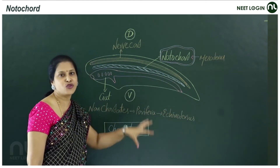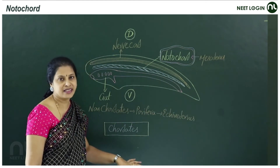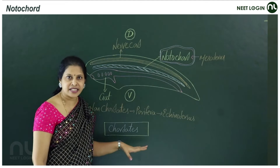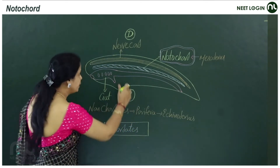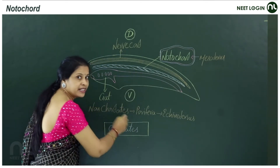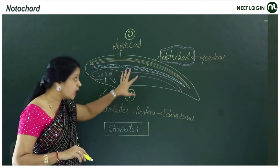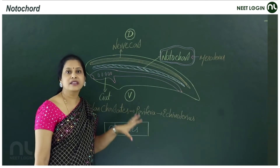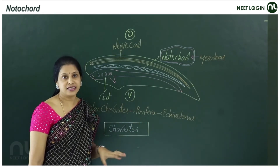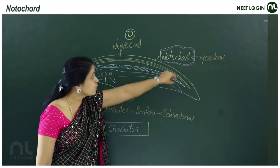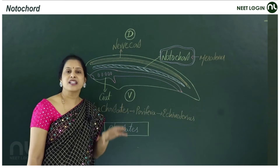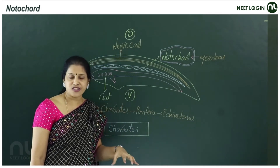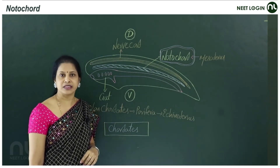Animals without a notochord are called non-chordates. From the phylum Porifera to Echinoderms, these are referred to as non-chordates. Other than chordates, all are non-chordates. The notochord is a mesodermal derivative and one of the key features in the classification of animals.